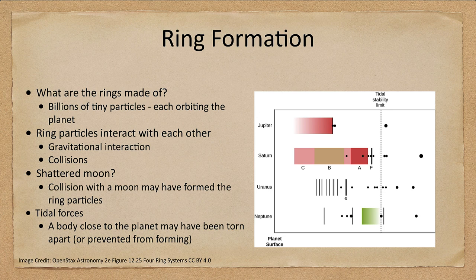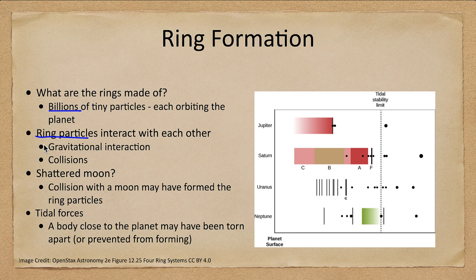So let's first look at ring formation. What are these rings made of? They are essentially like billions of tiny moons orbiting the planet. The ring particles will interact with each other gravitationally and through collisions. Looking at how these are distributed, there is a tidal stability limit — that is where a large object would be torn apart if it was any closer than that, so smaller objects could exist, but a large moon would not be able to exist inside that region.